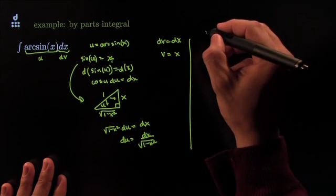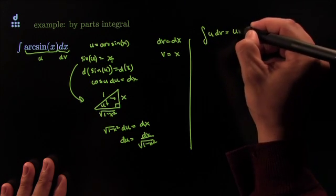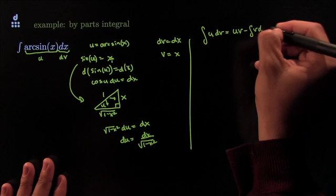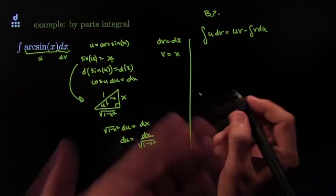Together, these two things go like this. We say that the integral of u dv is equal to u v minus integral of v du. That's the by-parts formula. We'll prove that in a different video.